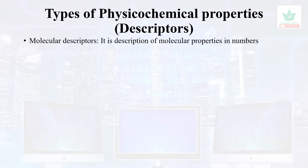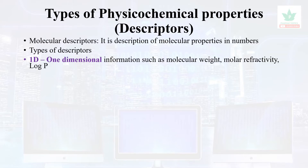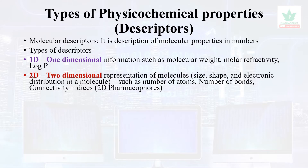Molecular descriptors are the description of molecular properties in numbers. The types of descriptors are: one-dimensional — molecular weight, molar refractivity, log P. Two-dimensional descriptors include size, shape, electronic distribution, number of bonds, and connectivity indices.